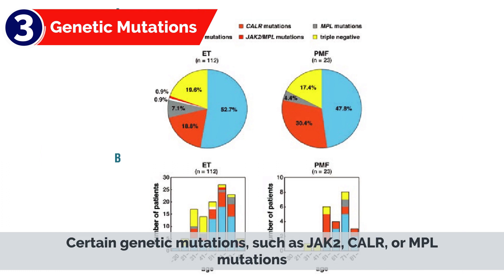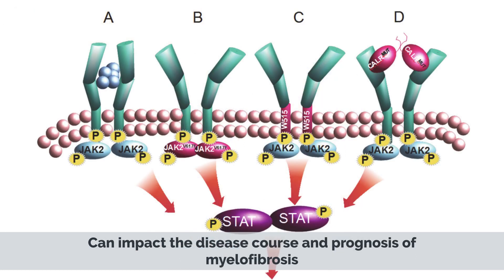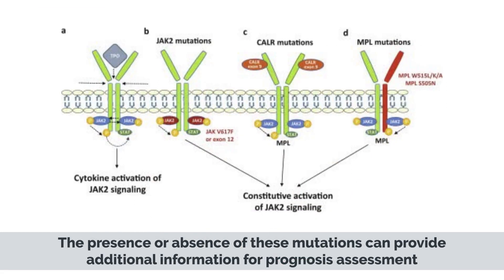3. Genetic Mutations. Certain genetic mutations, such as JAK2, CALR, or MPL mutations, can impact the disease course and prognosis of myelofibrosis. The presence or absence of these mutations can provide additional information for prognosis assessment.